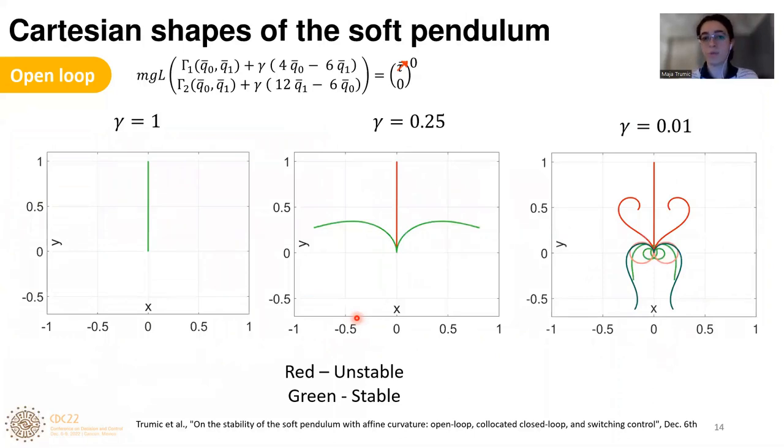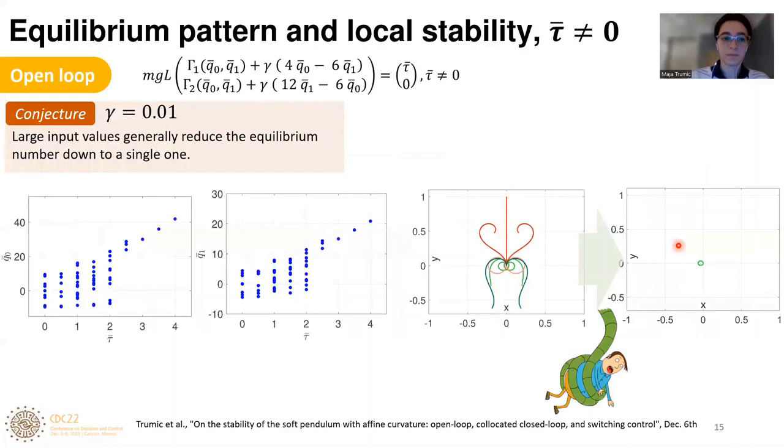So far, we've been involved in equations and numerics, but let us see what physically it means to have different gamma. For gamma equals to one, we have one equilibrium that is stable, so the pendulum is able to sustain itself in the upright position. For some smaller gamma, like 0.25, our pendulum can fall on one or to another side. For gamma that is quite small, like 0.01, we have a pendulum that is so thin and elastic that it can swirl around the base, and then we get a new set of equilibrium points.